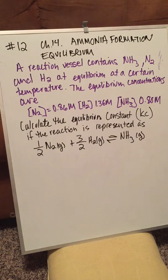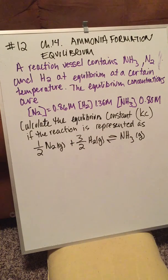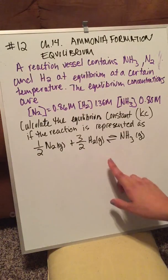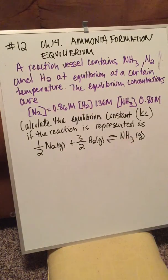So we want to calculate the equilibrium constant Kc for the reaction if the reaction is represented as this. So we have 1/2 N2 plus 3/2 H2, and that yields ammonia.